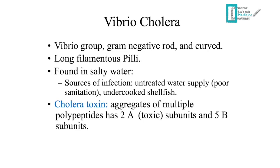Vibrio cholerae belongs to the Vibrio group. They are gram-negative curved rods with long filamentous pili that help in attachment. They are found in saline water, which is why infection can occur through untreated water supply, poor sanitation, or undercooked shellfish.